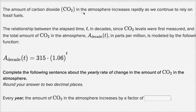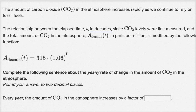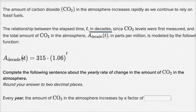The amount of carbon dioxide, CO2, in the atmosphere increases rapidly as we continue to rely on fossil fuels. The relationship between the elapsed time T, in decades — and I'll highlight that because that's not a typical unit — in decades since CO2 levels were first measured, and the total amount of CO2 in the atmosphere, A(T), in parts per million, is modeled by the following function. So T is in decades in this model.